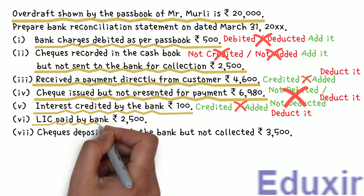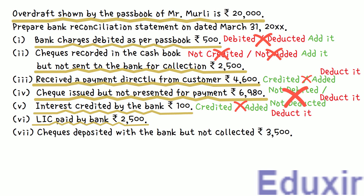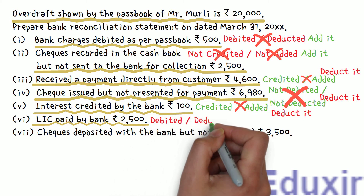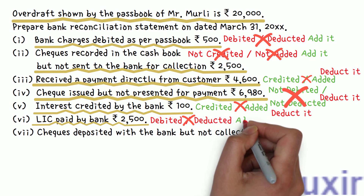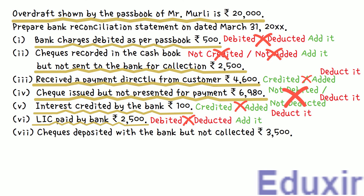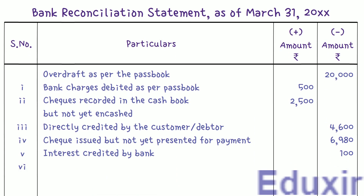Item 6: LIC paid by bank is 2,500 rupees. Sometimes the business gives standing instructions to the bank to make such payments periodically, so the payments are done automatically. When it is time to make these payments, the bank debits this amount in the passbook, but the business is not aware until the bank statement is received. These payments will not be in the business cashbook. We need to add this amount to the passbook balance and write 'LIC paid by bank' with 2,500 rupees in the plus amount column.